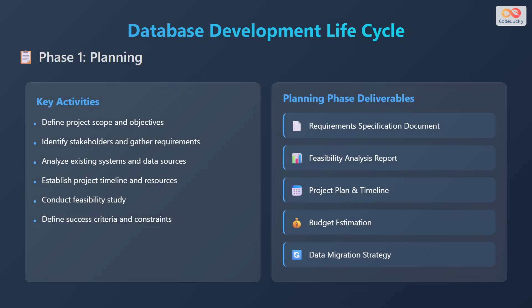Now let's dive into Phase 1: Planning. The planning phase is the foundation of any successful database project. During this phase, the project's scope and objectives are defined. Key activities include defining the project's scope and objectives, identifying stakeholders and gathering requirements, analyzing existing systems and data sources, establishing a project timeline and resources, and conducting a feasibility study, and defining success criteria and constraints.